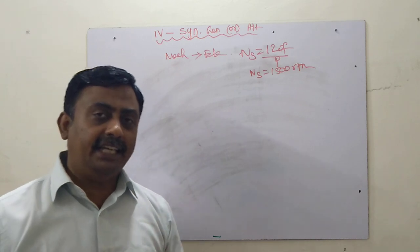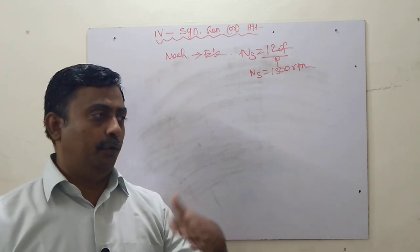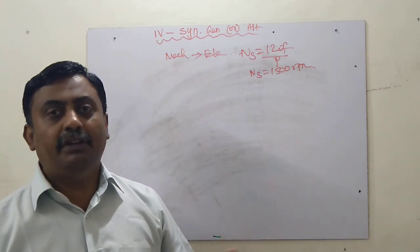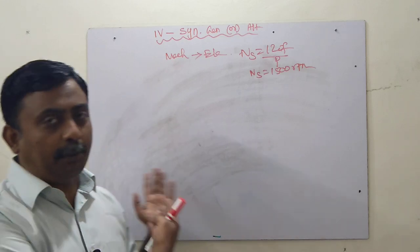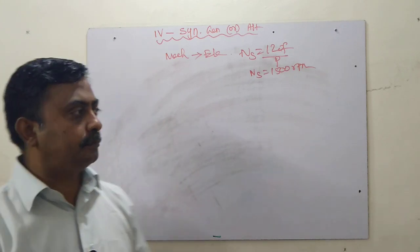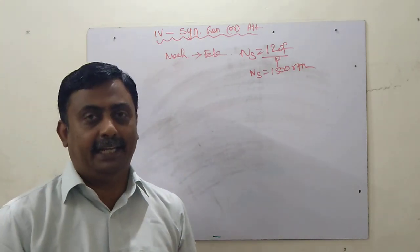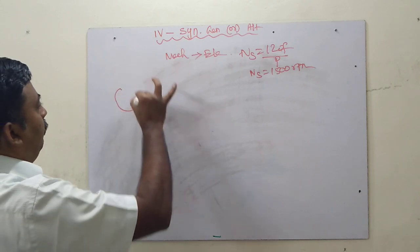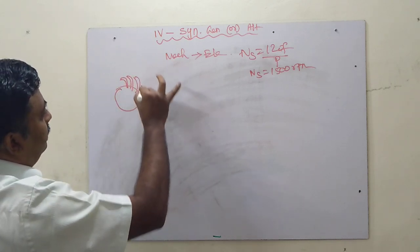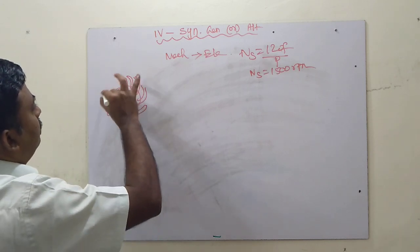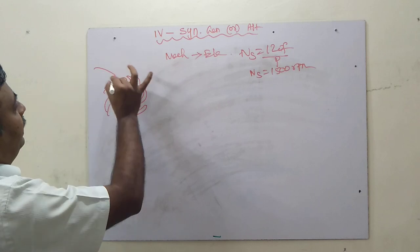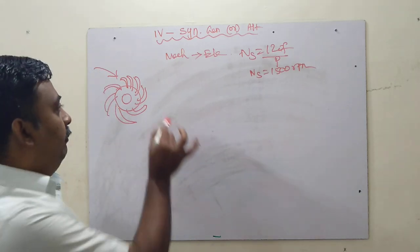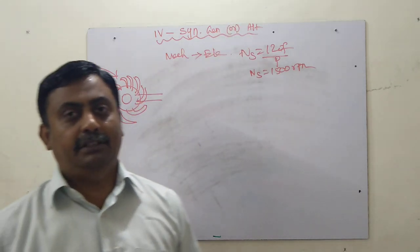Are we generating single phase or three phase? We generate three phase. If we use only one winding in the armature, we get single phase; if we use three windings, we get three phase. The prime mover runs and we generate electrical energy. Taking the hydro power plant as an example: there is a turbine, water hits the turbine at very high velocity, the turbine rotates, and it is directly coupled with the synchronous generator to produce electrical energy.